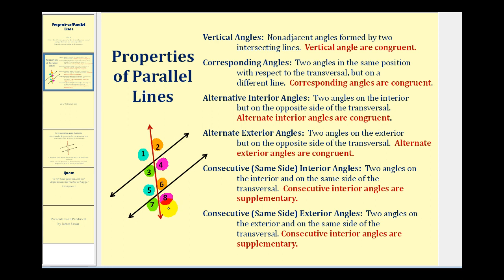These are corresponding angles, and they're also congruent angles. Alternate interior angles are two angles on the interior, but on the opposite side of the transversal. Interior angles are the angles between the two parallel lines. Therefore, the alternate interior angles will be angle three and angle six, as well as angle four and angle five, and again, these angles are congruent.